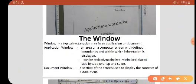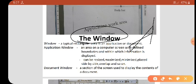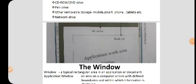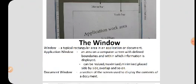The next topic is the window. What is a window? A window is a typical rectangular area in an application or a document. The application window is an area on a computer screen with defined boundaries within which information is displayed. An application window contains an open application, that is the current application such as Word or Paint. When two or more windows are open, only one of them is active and the rest are inactive.